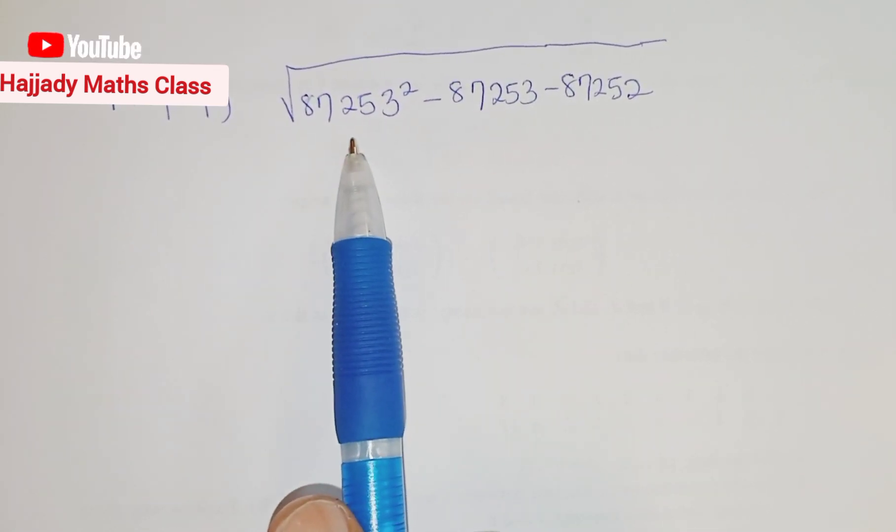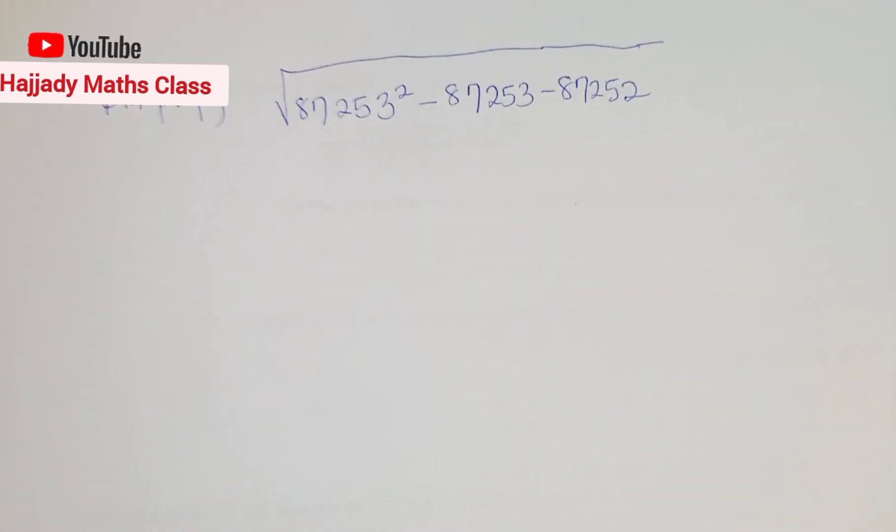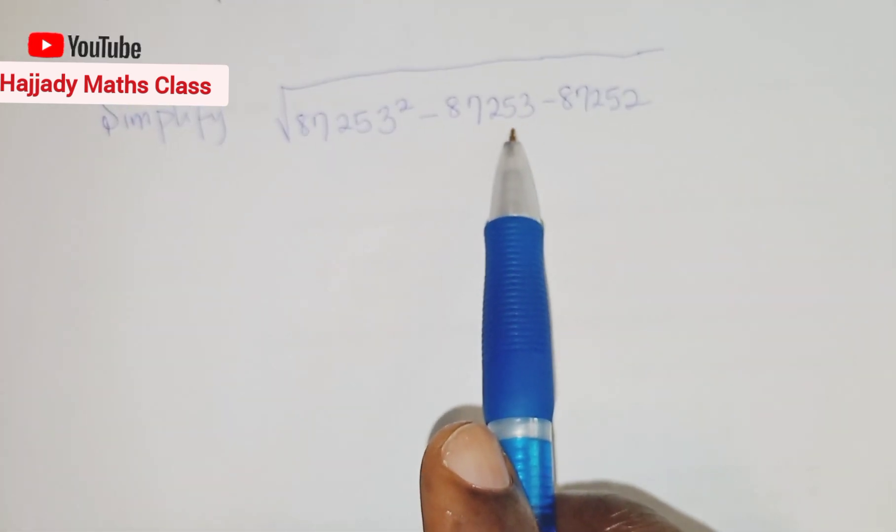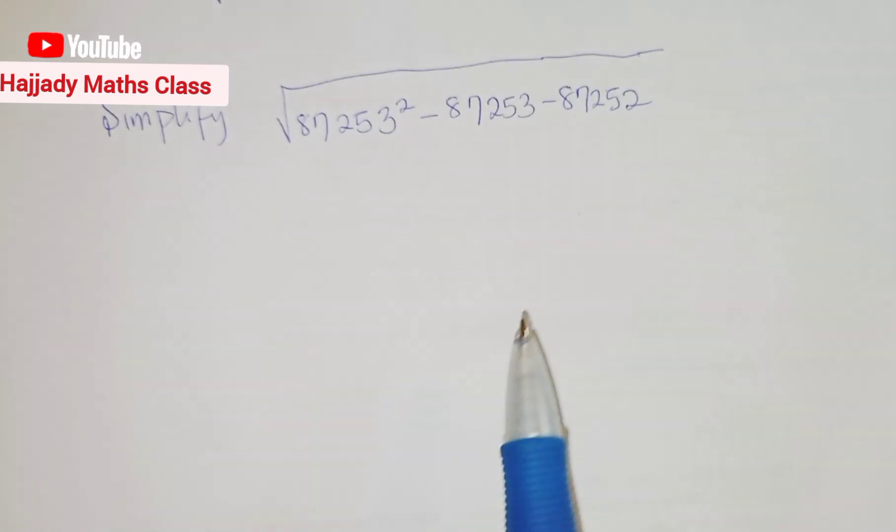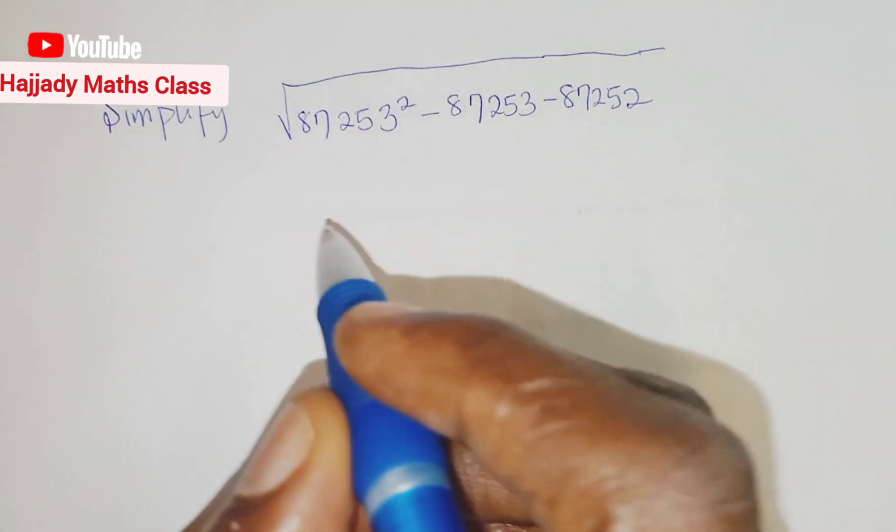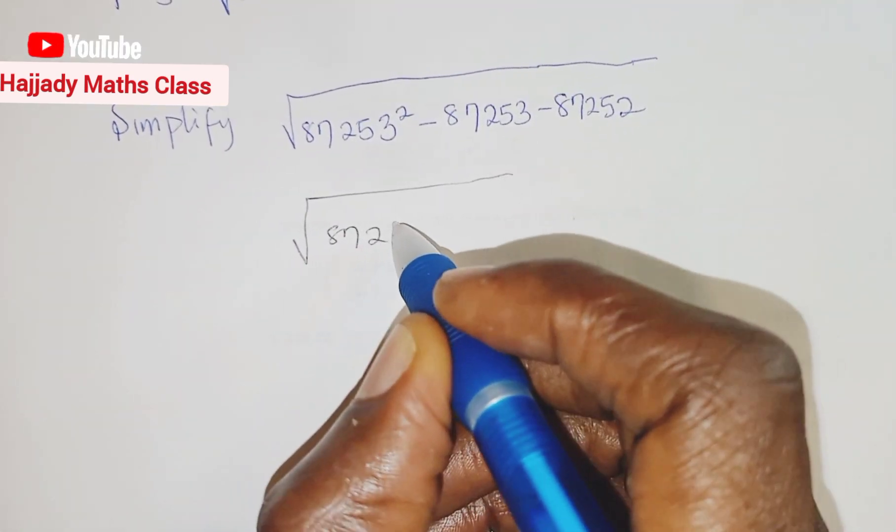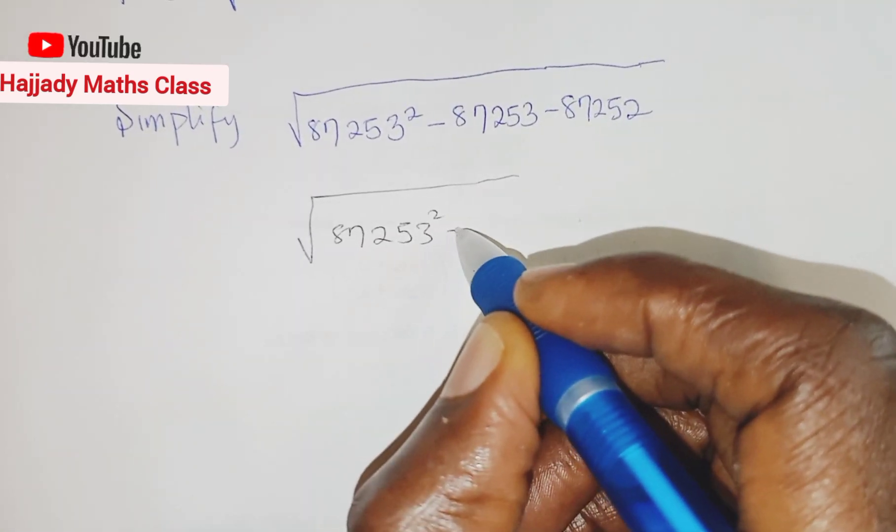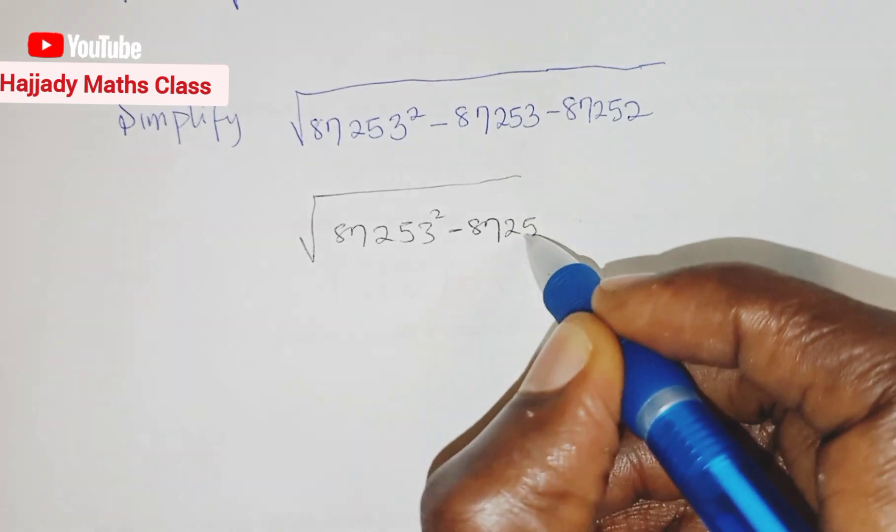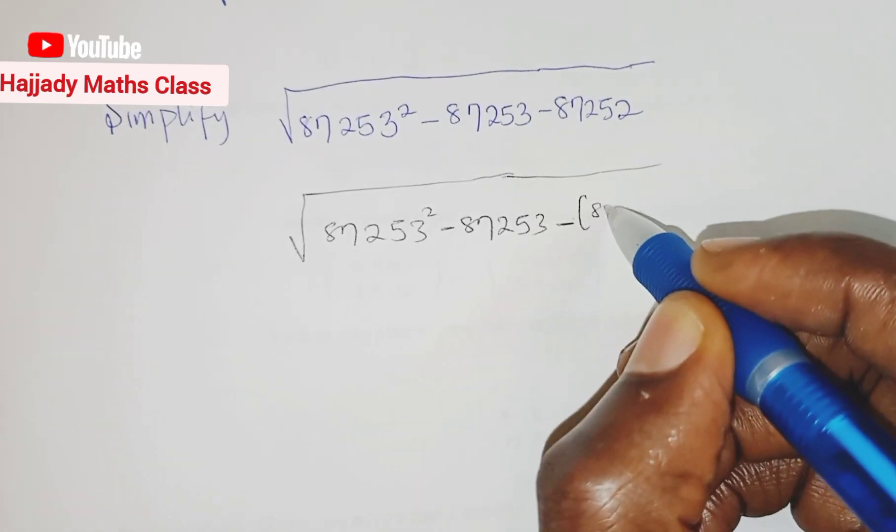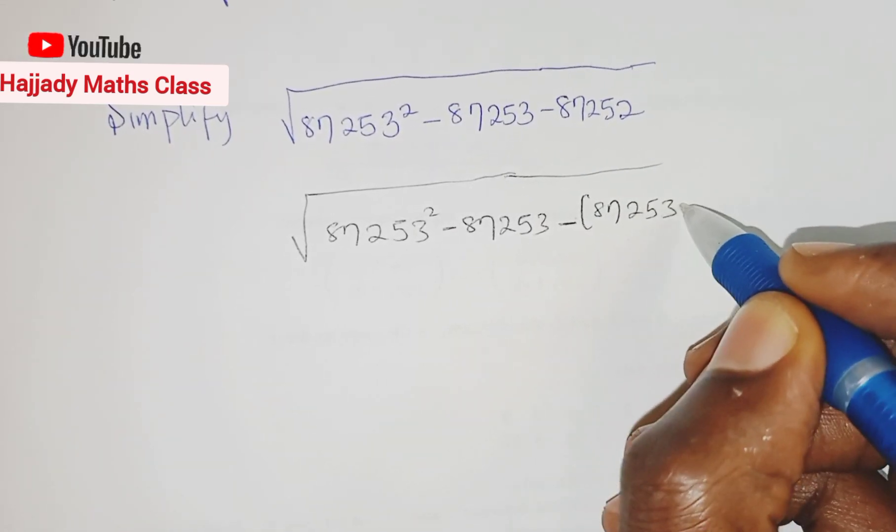Now we're asked to simplify this root of 87253 squared minus 87253 minus 87252. Now simplifying this, we can see that this number and this number are the same, but this is quite different, a little bit. So doing that now, we can say this is the same thing as square root of 87253 squared minus 87253 minus, this can be written as 87253 minus 1.